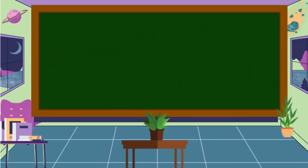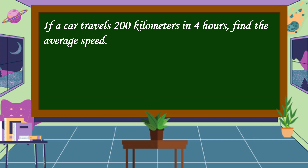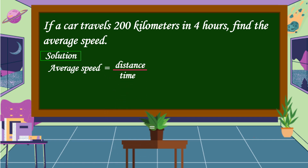Let's study the following examples. If a car travels 200 kilometers in 4 hours, find the average speed. In this problem, we're going to find the average speed. The formula is distance divided by time. The distance is 200 kilometers and the time is 4 hours. So, 200 kilometers divided by 4 hours equals 50 kilometers per hour, or 50 kph.